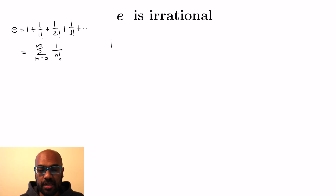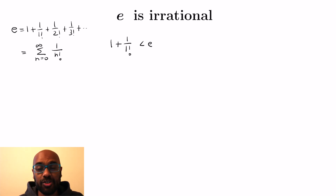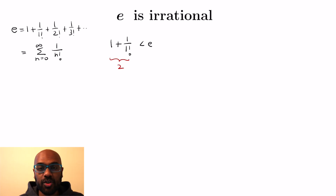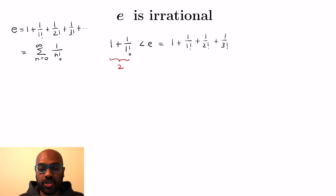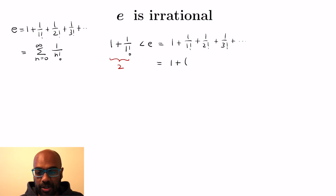So how is this proof going to proceed? First, we're going to prove that e can't be a natural number or an integer. If we look at the first two terms in the power series expansion, they sum to 2, so e is definitely greater than 2. Now let's write out the power series expansion again and compare the terms one by one to powers of 2 to get an upper bound that ensures e can't be a natural number.